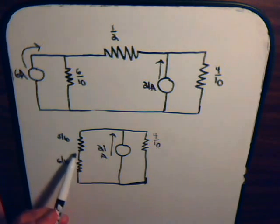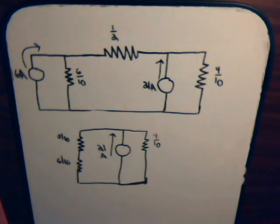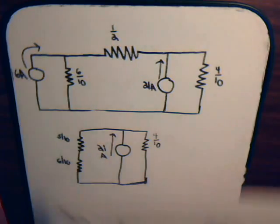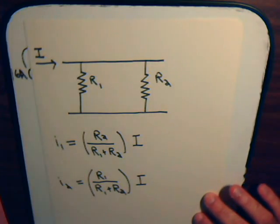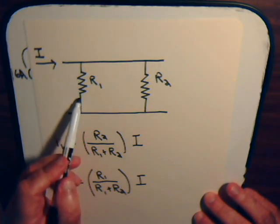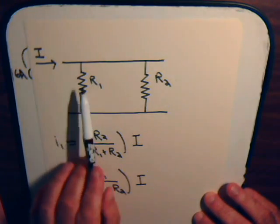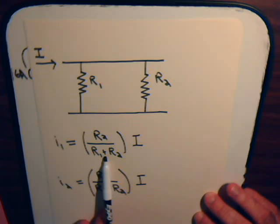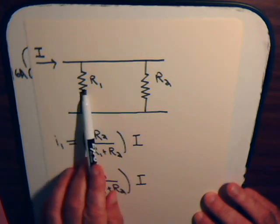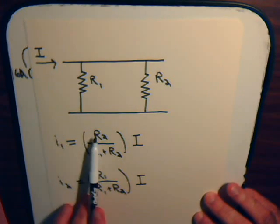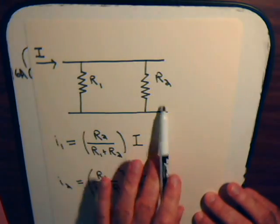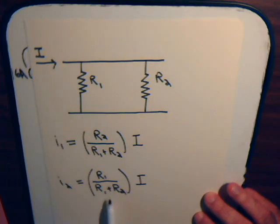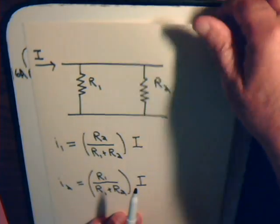We want the voltage drop across the one-half ohm resistor. Recall from an earlier video: when two resistors are in parallel fed by a common current source, the current through one branch equals the opposite resistor's value divided by the sum of both resistors, times the current source. We'll apply that current divider expression here.